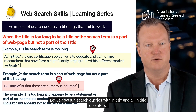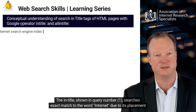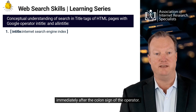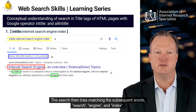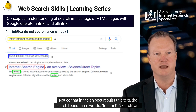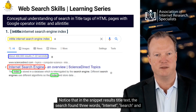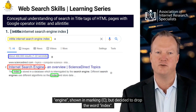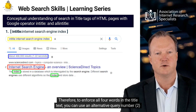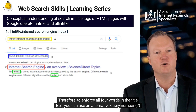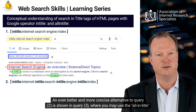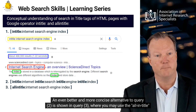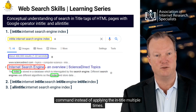Let us now run search queries with intitle and allintitle operators. The intitle, shown in query number 1, searches for an exact match to the word 'internet' due to its placement immediately after the colon sign of the operator. The search then tries matching the subsequent words 'search,' 'engine,' and 'index.' Notice that in the snippet results title text, the search found three words — internet, search, and engine — shown in marking C, but decided to drop the word index. Therefore, to enforce all four words in the title text, you can use alternative query number 2 with multiple instances of the intitle command. An even better and more concise alternative is shown in query 3, where you may use the allintitle command instead of applying intitle multiple times.